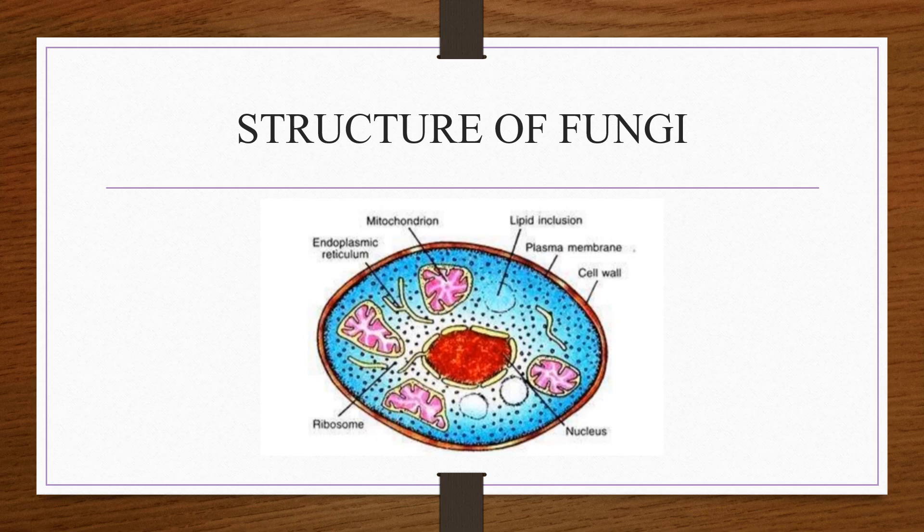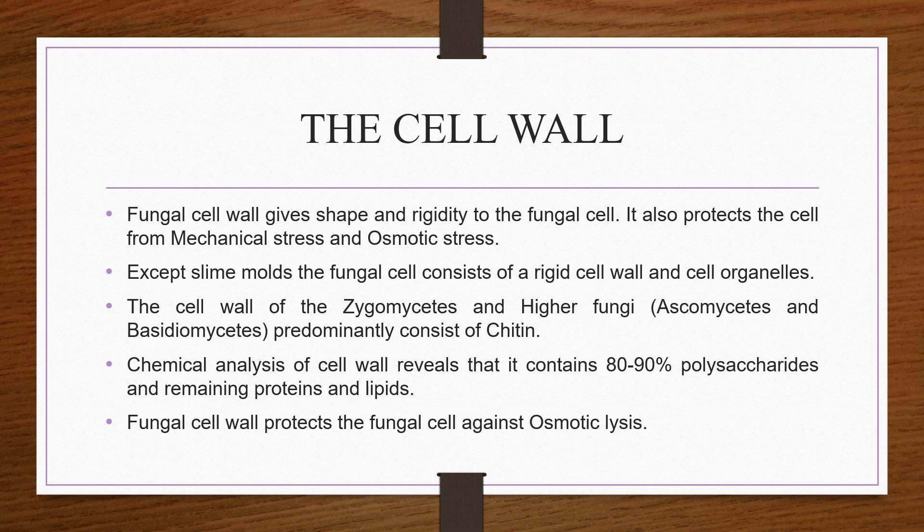The cell wall is made up of chitin. The fungal cell wall gives shape and rigidity to the fungal cell. It also protects the cell from mechanical stress such as pH change, temperature variation, and osmotic stress. Except in slime molds, all fungal cells consist of a cell wall and cell organelles.